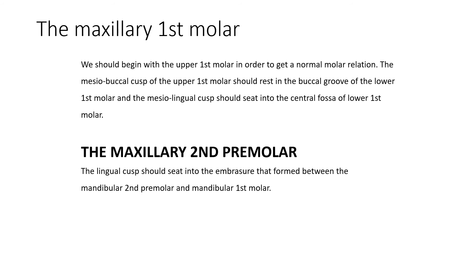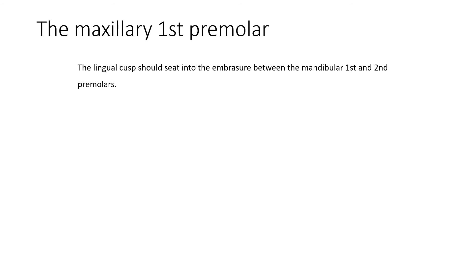We set the upper first molar first to establish the normal relation. The mesiobuccal cusp is in the buccal groove of the lower, and the mesiolingual cusp is in the central fossa of the lower first molar. For the maxillary second premolar, the lingual cusp should be set in the embrasure formed between the mandibular second premolar and the mandibular first molar.